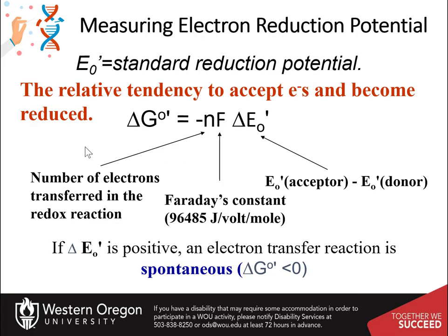The electrons from our food molecules carry energy that drives the movement of protons across the inner mitochondrial membrane into the inner membrane space. This will form a gradient of protons that will be used to make ATP. The potential energy of the system can be calculated using the equation shown here.